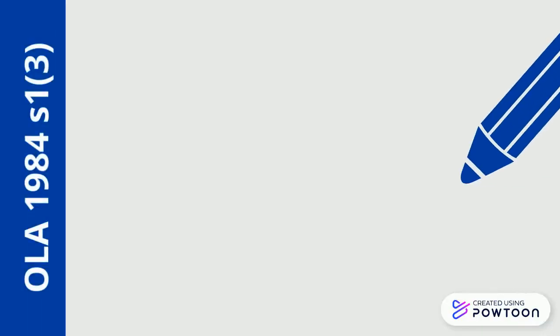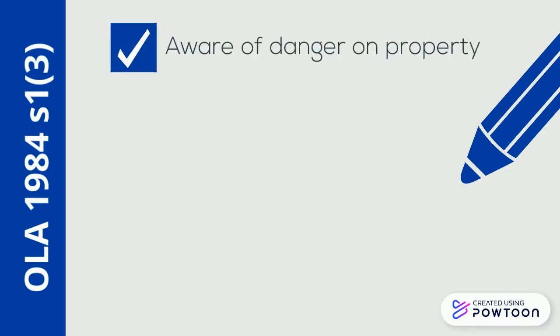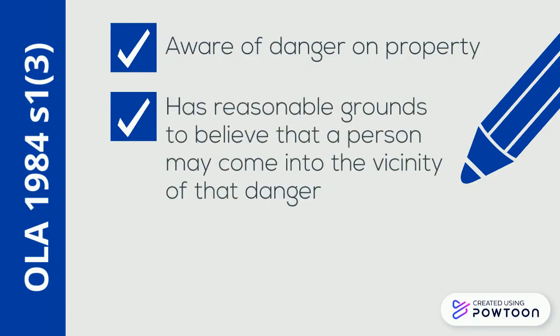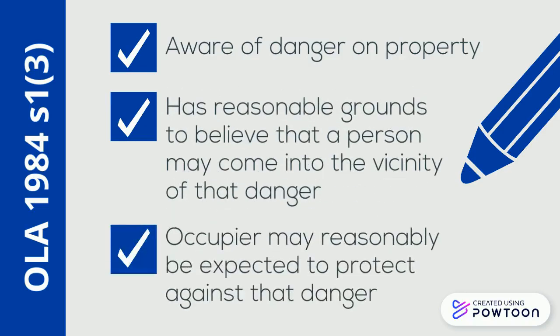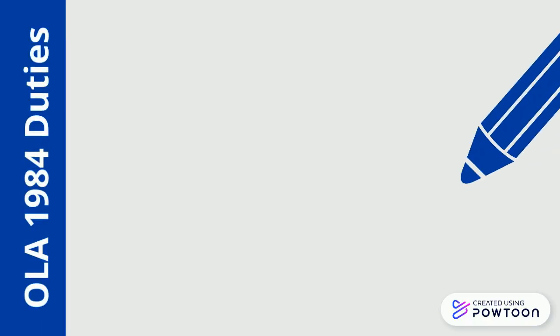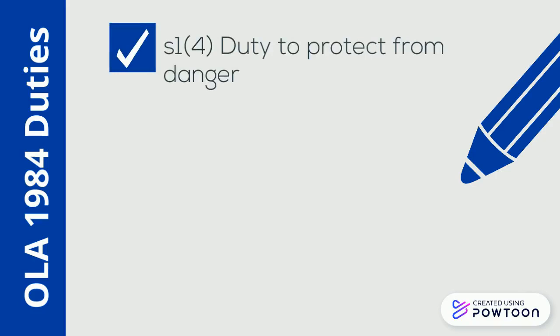Under section 1 subsection 3 of the Act, an occupier has a duty towards a trespasser if he is aware of the danger on his property, he knows or has reasonable grounds to believe that a person may come into the vicinity of that danger, and the occupier may be reasonably expected to protect against this danger. The occupier then has a duty to protect the trespasser from that danger.